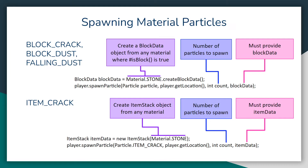Finally, we have material particles where you can assign a material to a particle to change what's displayed. There are two types: block material particles where you give it a solid block object, and item crack where you can give it any material. For block crack, block dust, and falling dust, you have to give it a block material — you can verify this by calling material.isBlock() which will return true. You create a BlockData object using material.createBlockData() and pass that as a parameter at the very end of your spawn particle method call.